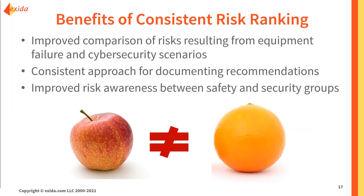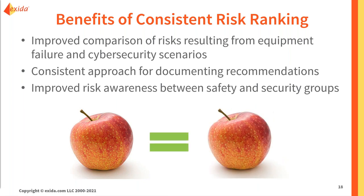By doing this, we avoid comparing apples and oranges between safety and cybersecurity risk. We ensure a consistent approach for documenting recommendations, improved risk awareness, and an improved comparison of risks — whether from equipment failure or a cybersecurity scenario. This helps when assigning priorities and budgets, making sure we understand the difference between risk on the safety side and the cyber side to address the overall facility risk.